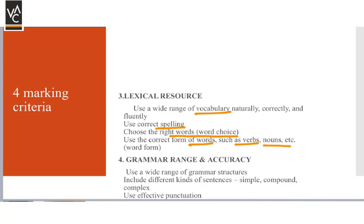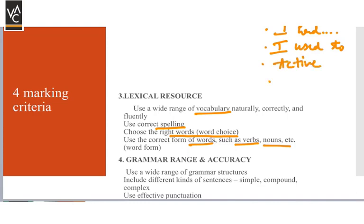For example, past, present, and future tenses. If you're talking about the past, it does not mean you only use the second form — you can also use 'I had' or 'I used to,' which adds variety. Or if you're just writing active sentences, start writing some passive ones. If you follow these tips, you will score 8 bands — and that is the reason we are here making these videos and reaching out to you.